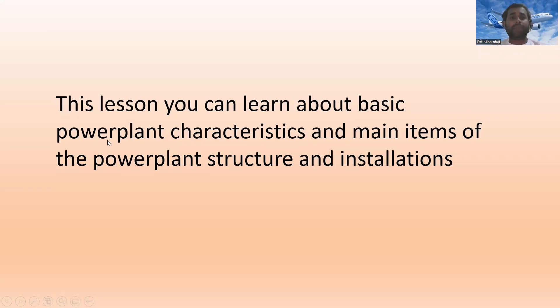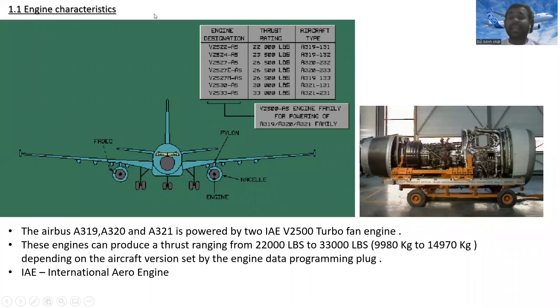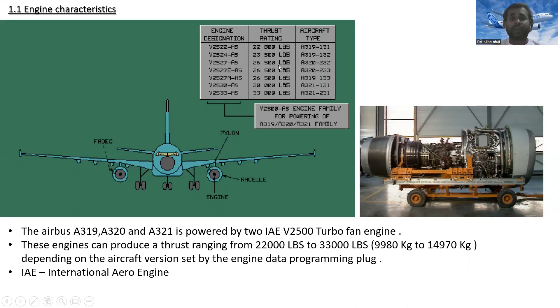In this lesson you will learn about basic power plant characteristics and main items of the power plant structure and installation. For engine characteristics, looking at engine designations, thrust ratings, and aircraft types: the V2522-A5 has a thrust rating of 22,000 lbs and is used on the A319-131. The V2524-A5 has 23,500 lbs thrust and is used on the A319-132. The V2527-A5 has 26,500 lbs thrust and is used on the A320-232.